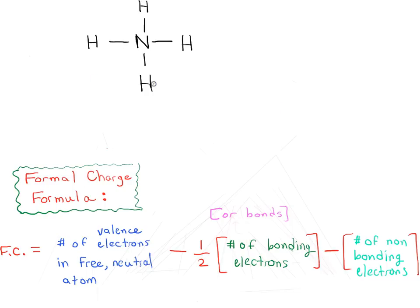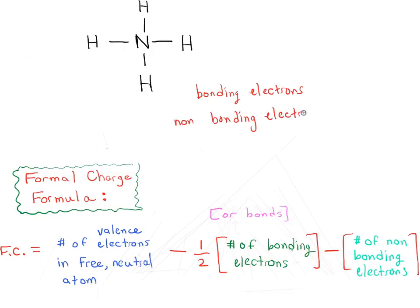Alright, let's start by asking the same question we ask every time: we need to figure out two things for every atom we're looking at. We need to know the number of bonding electrons — those are electrons that are part of a bond — and we need to know the number of non-bonding electrons, which are attached to an atom but not involved in an actual bond. We call those lone pairs.